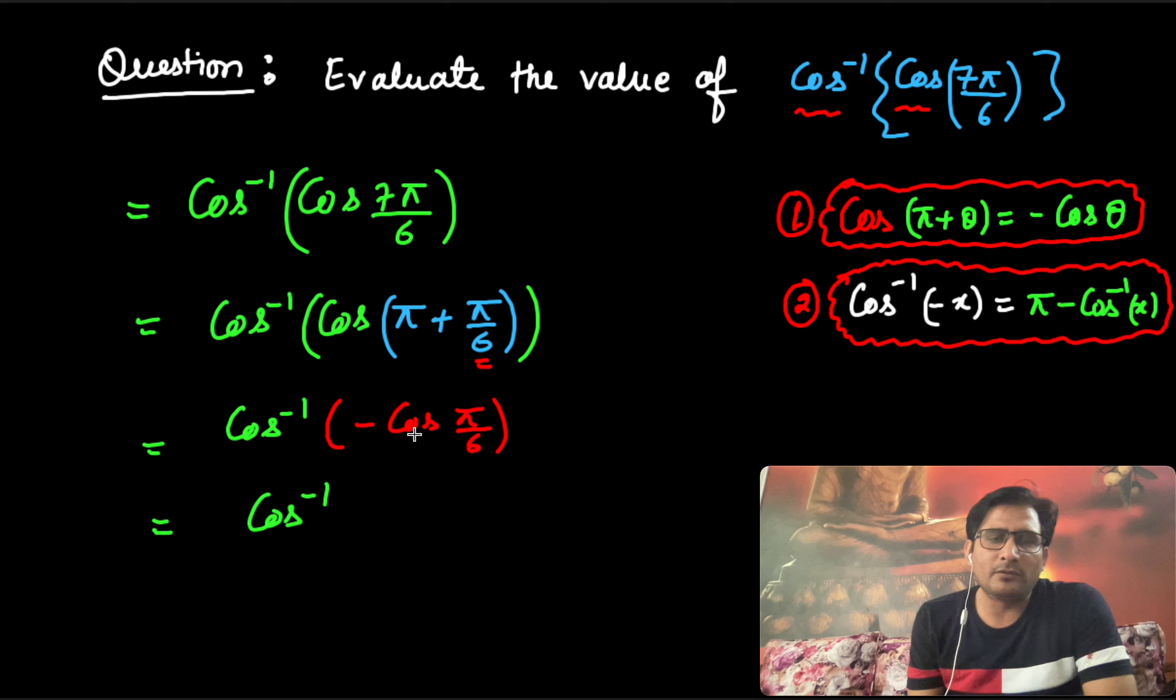So we have the value cos(π/6). If it is written cos inverse minus cos(π/6), let us apply this second formula, cos inverse minus x.